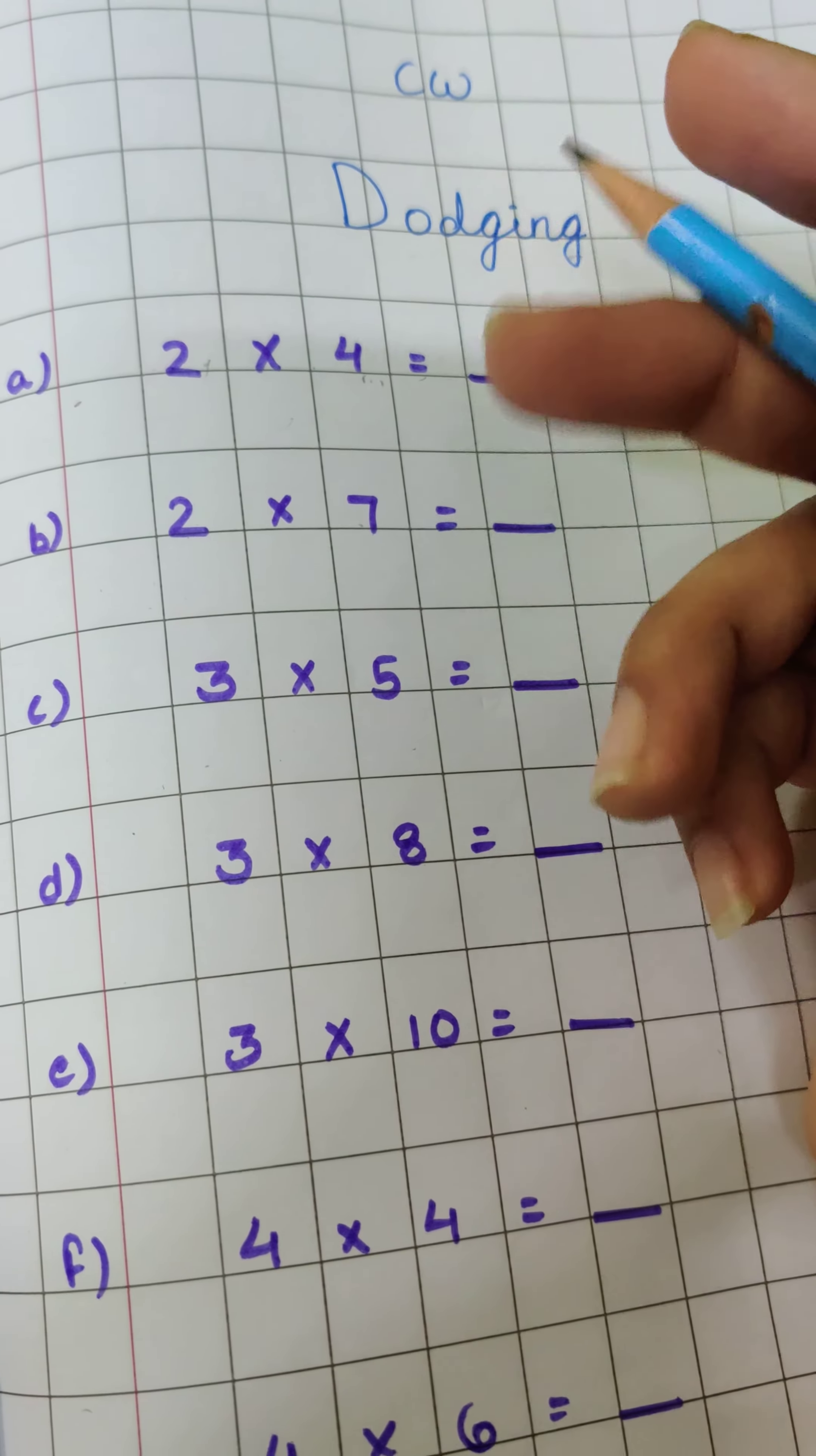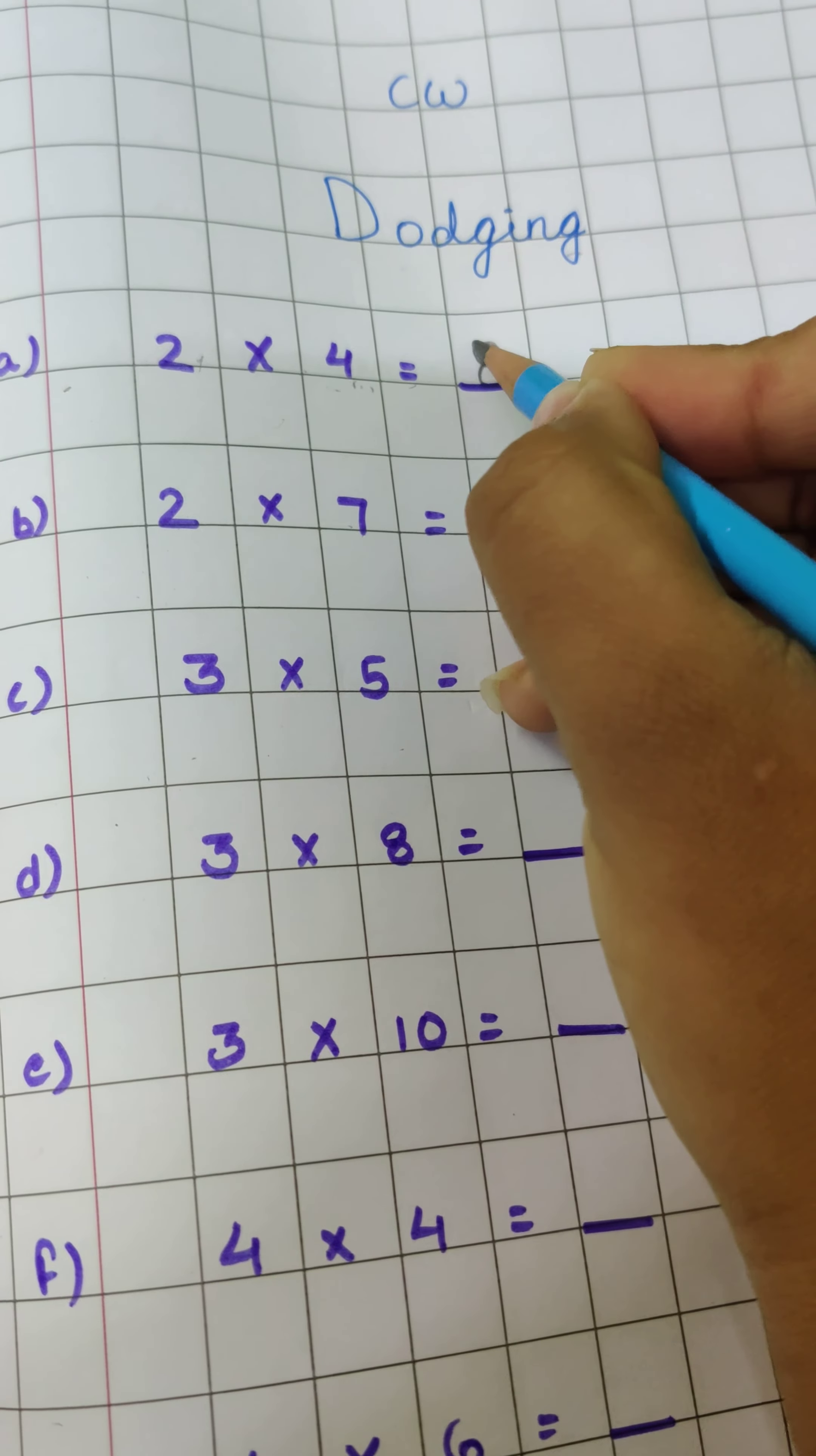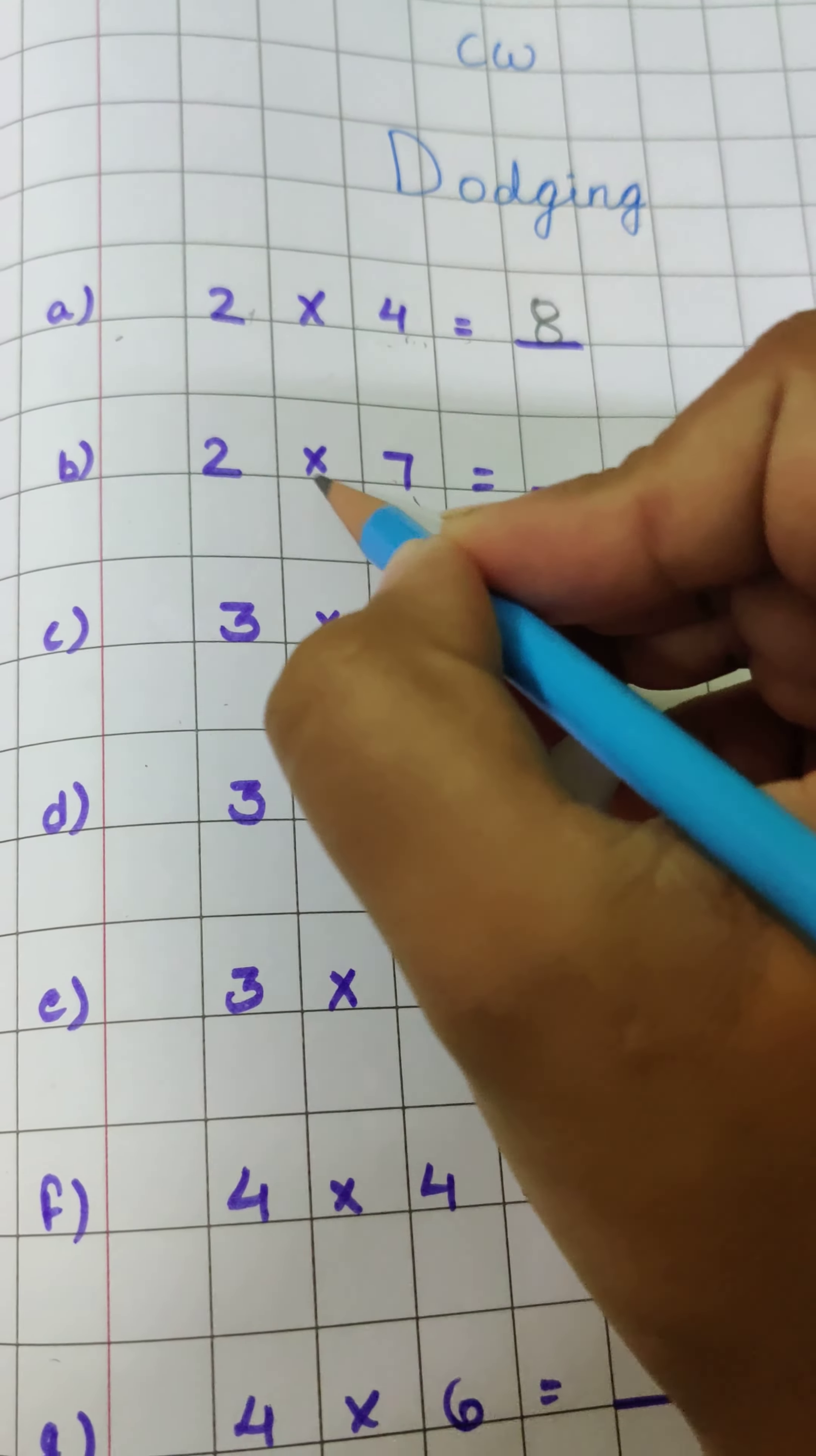2 ones are 2, 2 twos are 4, 2 threes are 6, then 2 fours are 8. So our answer is 8, we will fill here 8.